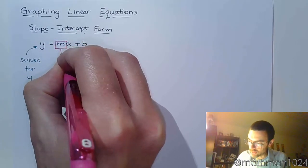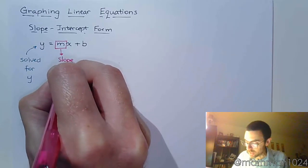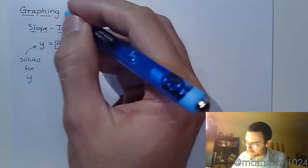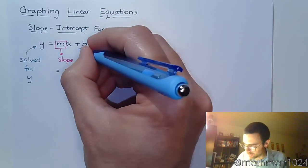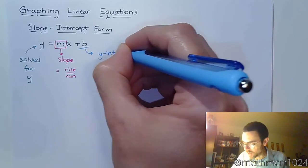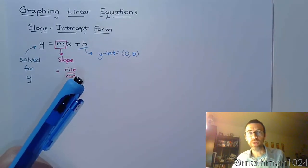As we're going to be seeing here in just a moment, we oftentimes look at our slope as rise over run. And then this guy right here, this b.